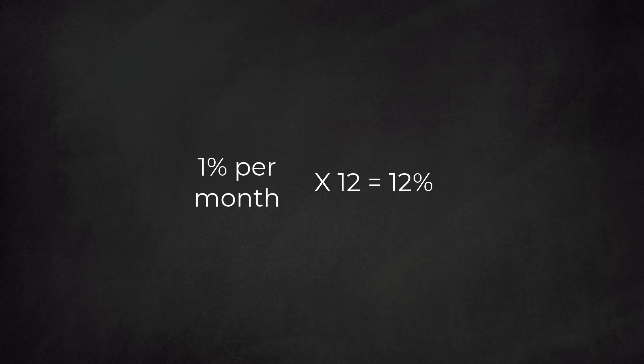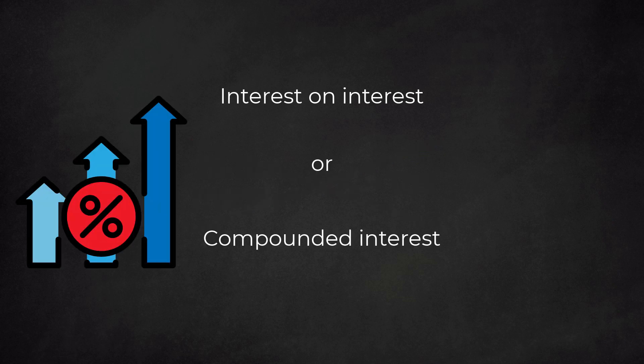Perhaps we think we can do this by multiplying by 12. 12 times 1% equals 12%. This is wrong. The reason is that the monthly interest will also produce interest in the remaining months. We call this interest on interest or compounded interest.